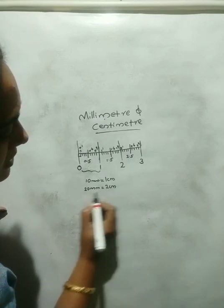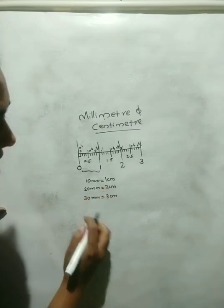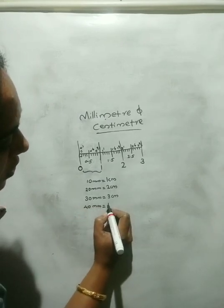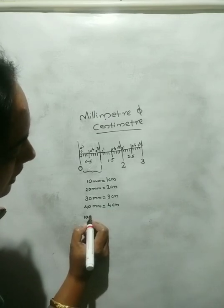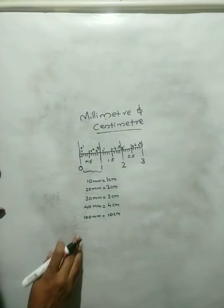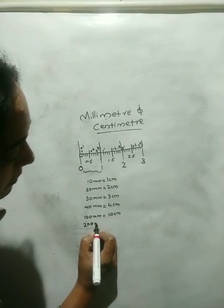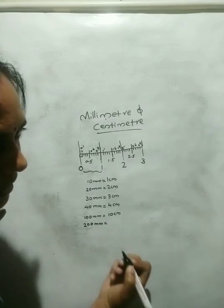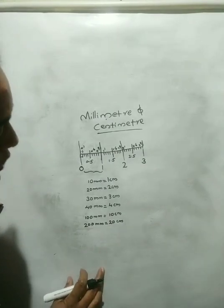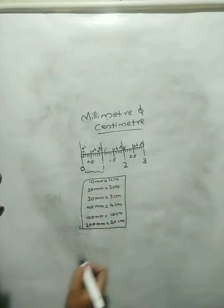Continuing: 10, 11, 12 ... up to 20 millimeters will be 2 centimeters. 30 millimeters will be 3 centimeters. 40 millimeters will be 4 centimeters. So 100 millimeters will be 10 centimeters, and 200 millimeters will be 20 centimeters. This is the relation between millimeter and centimeter.